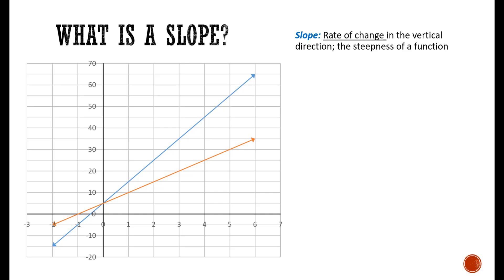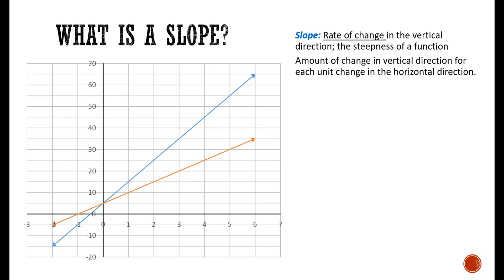We use this definition all the time. If you were describing a hill and it was very steep, you would say that it has a large slope. If the hill was not steep, you would say that it has a small slope. The same definition applies here. In math or calculus, we don't settle on descriptions like little or big — instead we want to quantify this by calculating the amount of change in the vertical direction for each unit change in the horizontal direction.